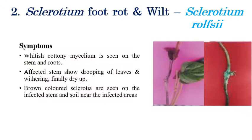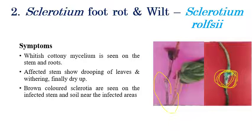Coming to the second disease: Sclerotium foot rot or wilt, which is caused by Sclerotium rolfsii. The symptoms include whitish cottony growth on the stem and root regions. In later stages, drooping of leaves can be seen, followed by drying up of the plant. It also produces brown to black color sclerotia on the infected stems and lower stem or root regions.